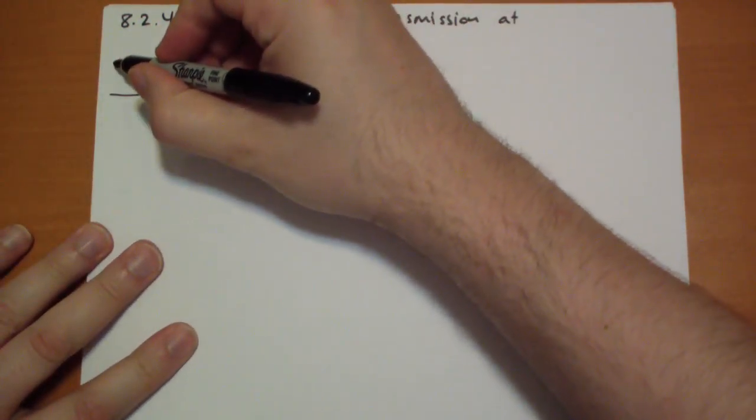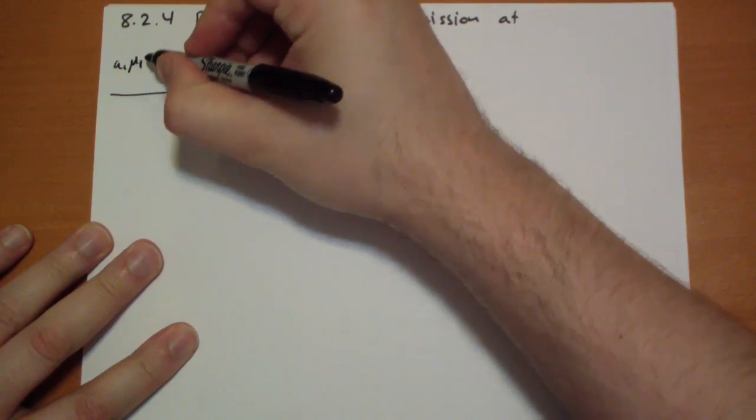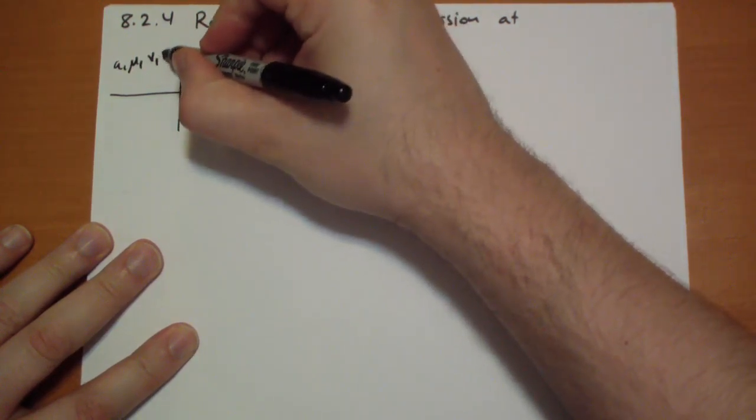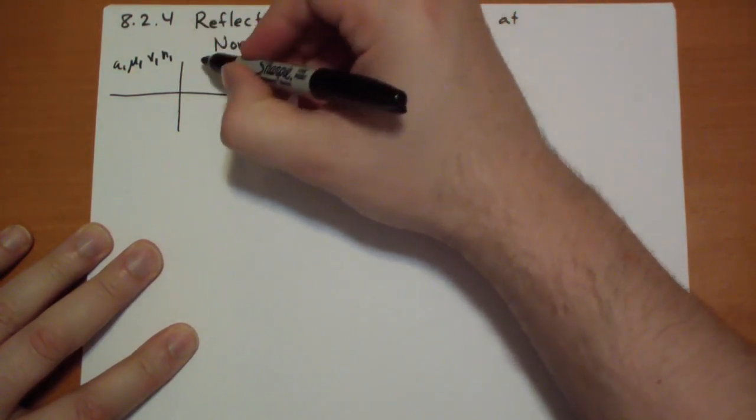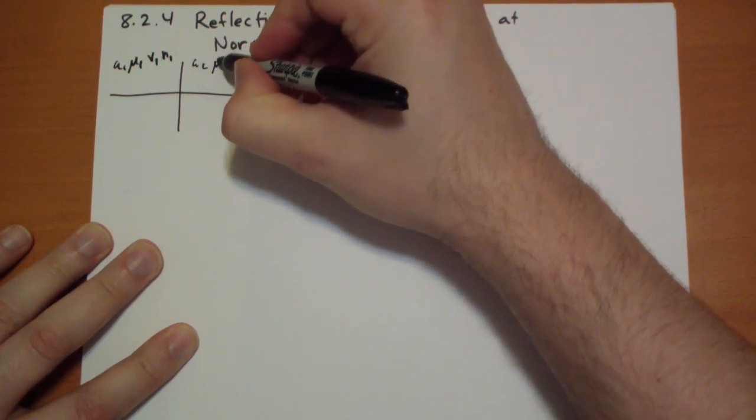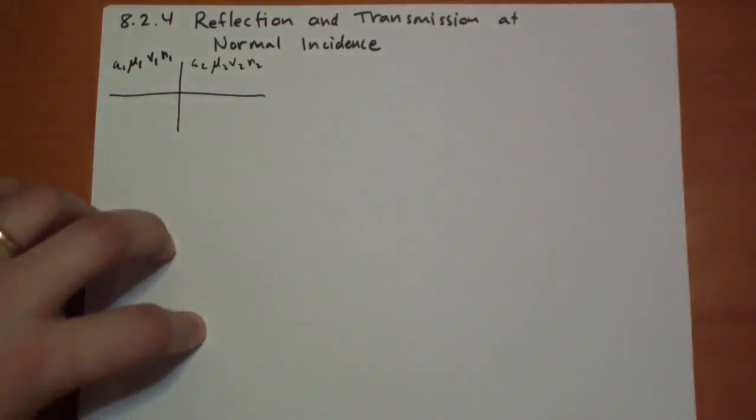On the left side we have epsilon 1, mu 1, which of course leads to a velocity 1 and an index of refraction 1. On the other side we have epsilon 2, mu 2, v 2, and n 2.